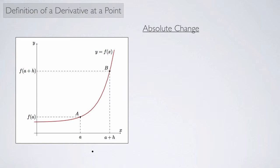And I can look at something called the absolute change. That's the change between f of a plus h and f of a. I'm just taking f of a plus h and subtracting out f of a. So that's equivalent to this distance right here, this vertical distance right here.